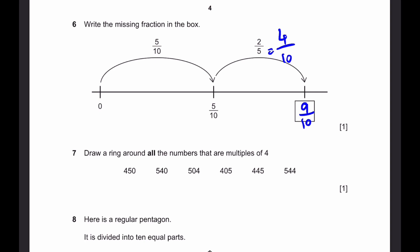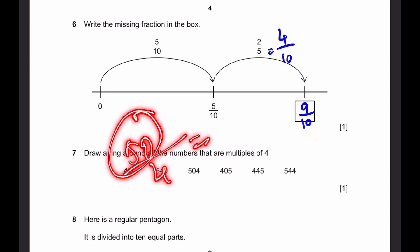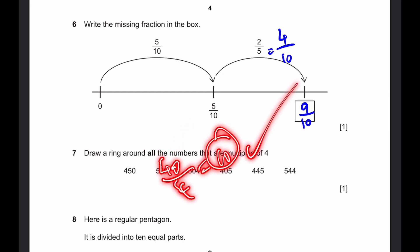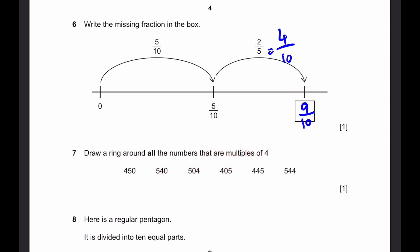Let's start with 450. The last two digits are 5 and 0, which makes 50. This is not a multiple of 4 since when we divide by 4 we get 12.5 — not an integer. So we can't draw a ring around it. 540 is a multiple of 4 since the last two digits, 40, divided by 4 gives us 10, which is an integer. So we can circle this.